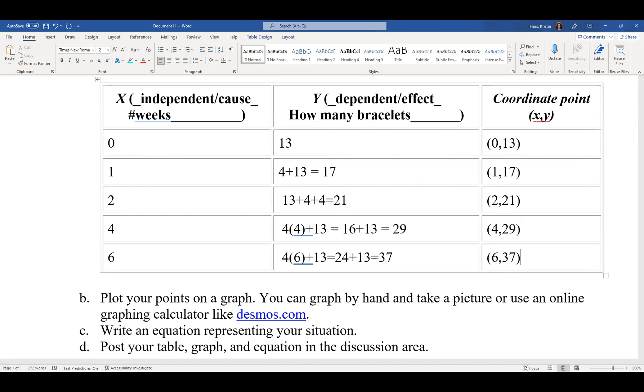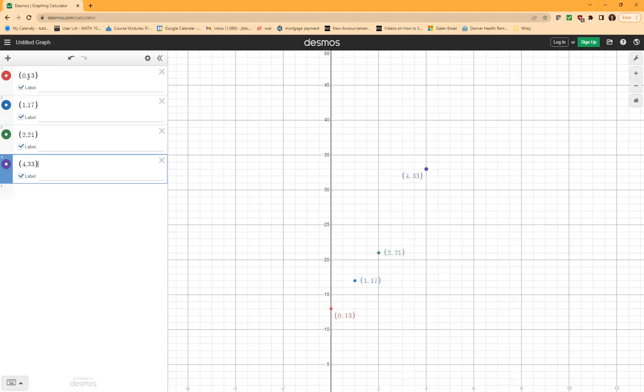And now I'm going to put those into Desmos. So here's Desmos. I've already started putting some of those in. So here's our first, second, third, fourth. I'm going to put in the last point, (6, 37). And I'm going to click label so I can see it. And hopefully those points line up. It should be 29.